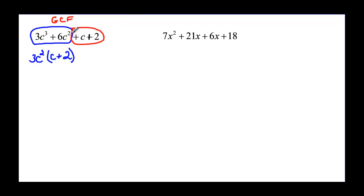In the next set, c + 2, it may not look like it has anything in common, but they do. They have a positive 1 in common, if nothing else. So it's +1, and then 1 times c would be c, and 1 times 2 would be 2.